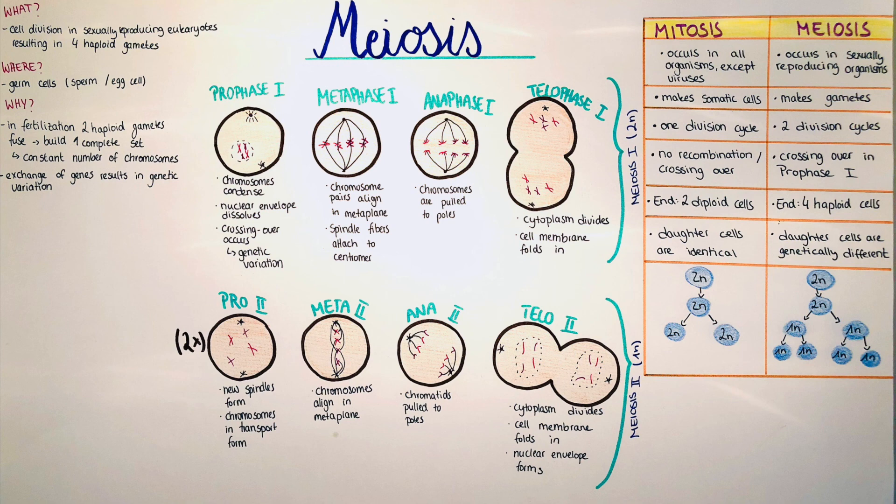I drew down here again which part of the cell divisions are diploid and which are haploid. You can see here that in mitosis the whole process is diploid, and in meiosis the meiosis one is diploid and the meiosis two is haploid.